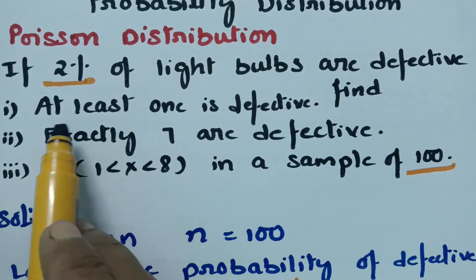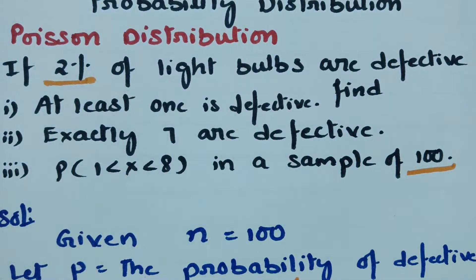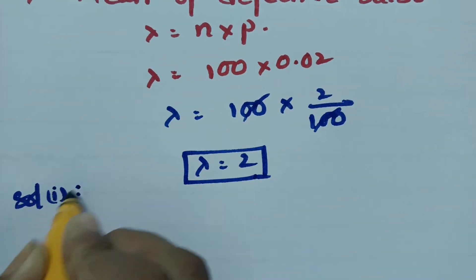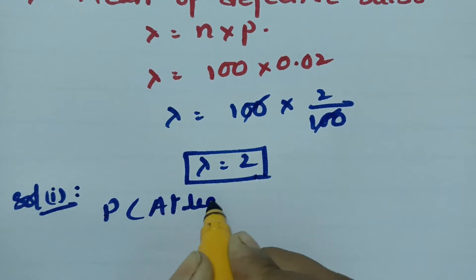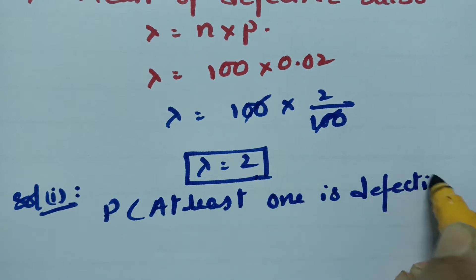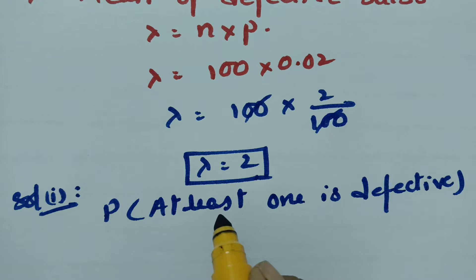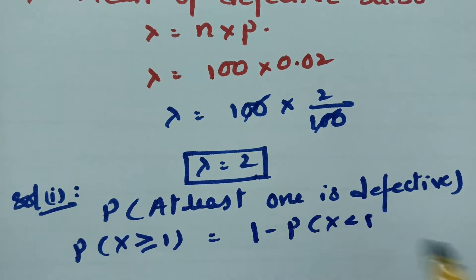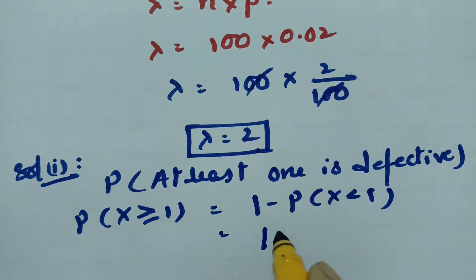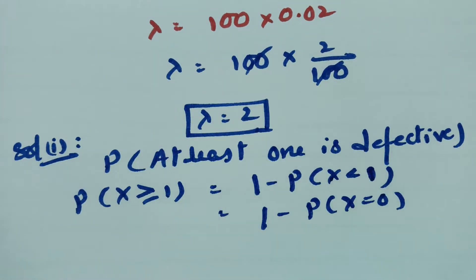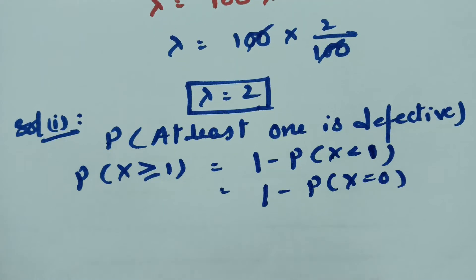We have to find out the probability of getting at least one defective among 100. Solution 1: probability that at least one is defective — at least means minimum one, maximum till 100. That is probability of x greater than or equal to 1. This can be written as 1 minus probability of x less than 1. The value which is less than 1 is 0, so this becomes 1 minus probability of x equals 0.